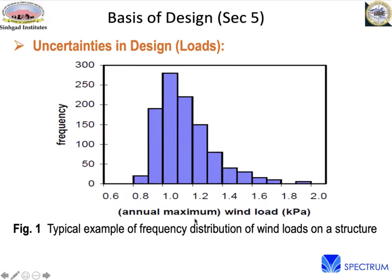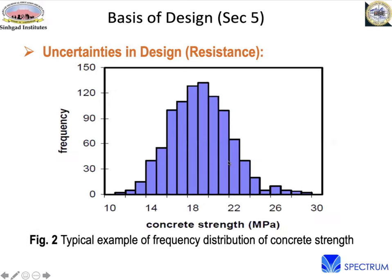For example, wind could be 5 km/h or 150 km/h — you can plot histograms showing variation and uncertainty. The same applies to resistance; when you design concrete, you get quite a range of strength variation depending on your quality control. For the last 70 to 80 years, researchers have been working on how to deal with this uncertainty, especially in fields like aerospace.